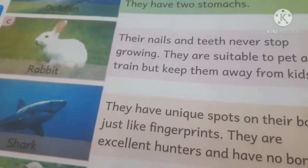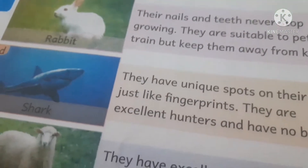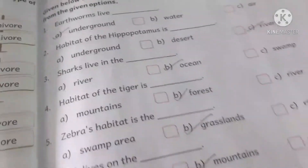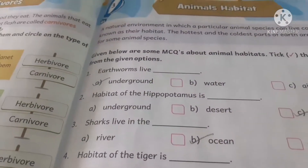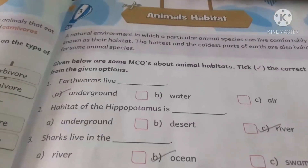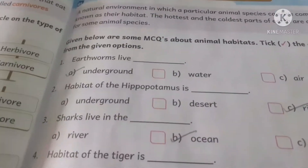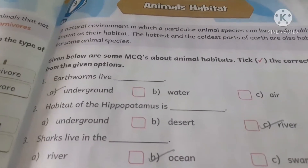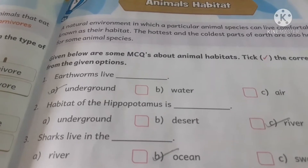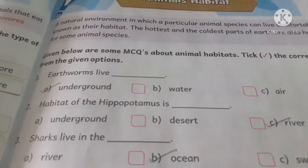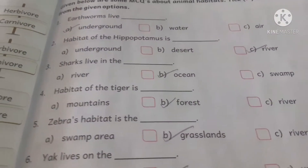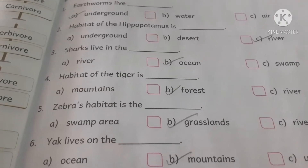Next, we'll discuss about animal habitat. We have already discussed this once but it is the revision class so we repeat it. The earthworm is an insect that lives underground. The habitat of hippopotamus is the river — they live in rivers. The shark lives in the ocean — a water animal that lives in the ocean. The habitat of the tiger is the forest because they are forest-living animals.